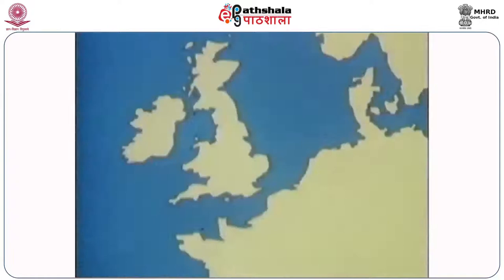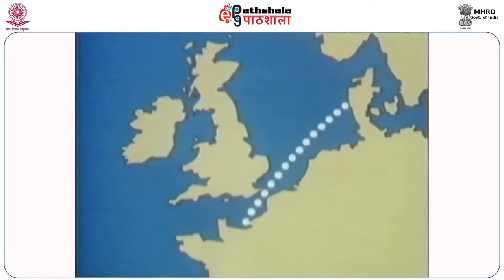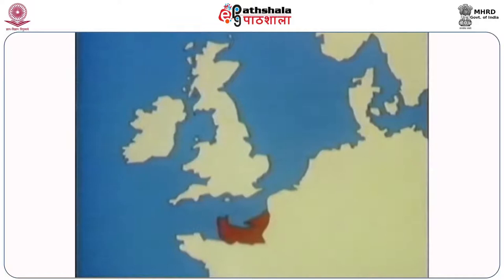Whatever the answer is, the history of the Normans remains a remarkable story. 150 years before the invasion of England, after many years of Viking attacks, a reluctant king of France allowed a group of Vikings from Denmark to settle on the coast opposite England. This became known as Normandy — the land of the Northmen, or Normans. For more than 200 years, the Normans were a powerful force in the changing history of Europe.